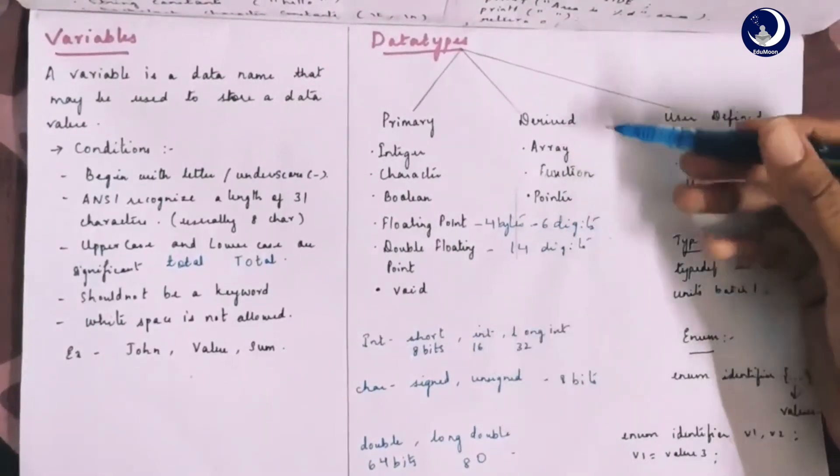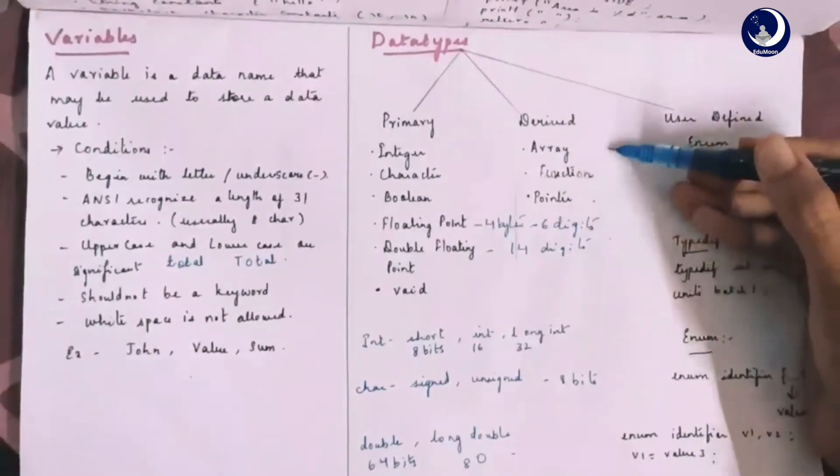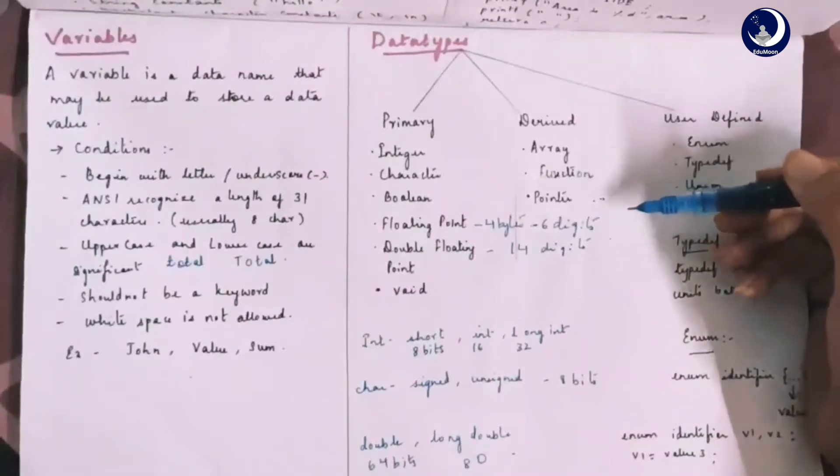In the derived data types, we have array, function and pointer about which we are going to discuss in the upcoming lectures.